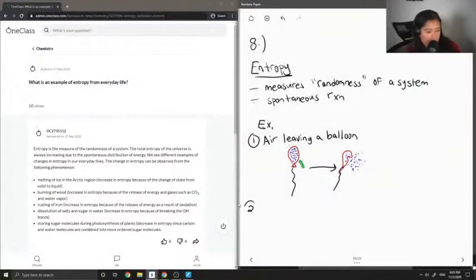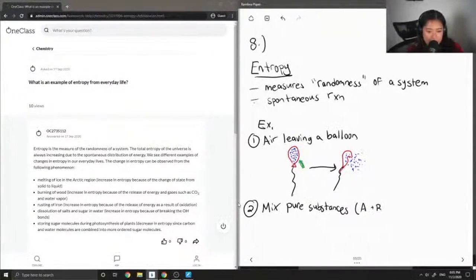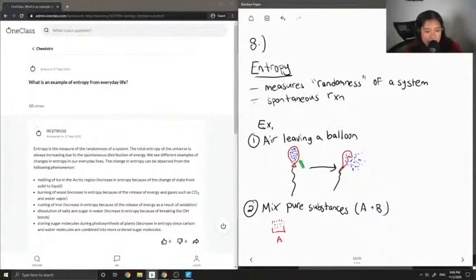Another common example is when you mix pure substances together. Let's say you have A and B. I'll write A - a nicely ordered pure substance.